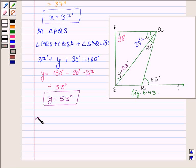Thus, the values of x and y are 37 degrees and 53 degrees. So this completes the solution. Hope you enjoyed it. Take care and bye for now.